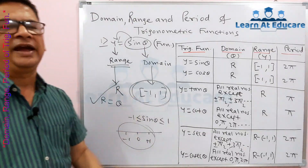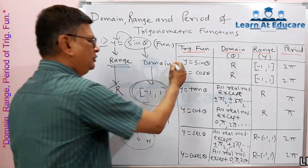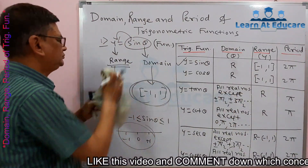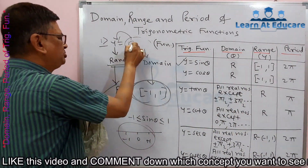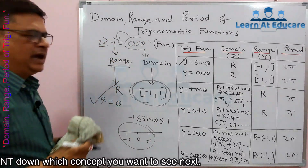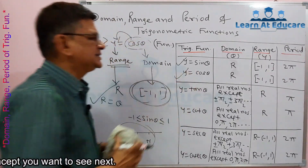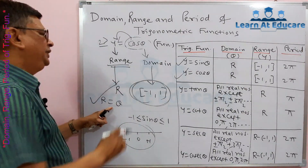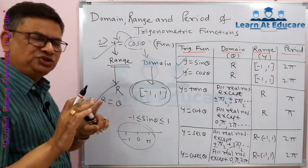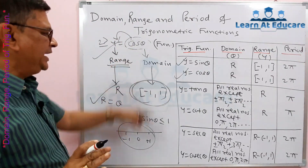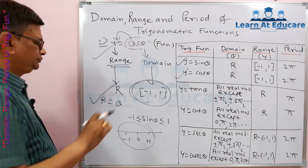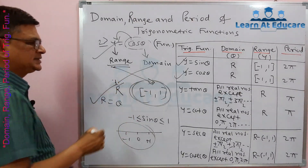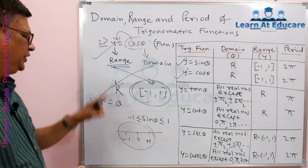Now if we take y = cos θ, this function has the same domain and range as sine. For every real number θ, we can define cos θ — it is nowhere undefined. Similarly, the range of cos θ is also [−1, +1].